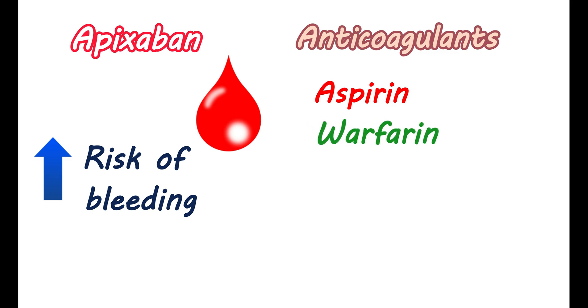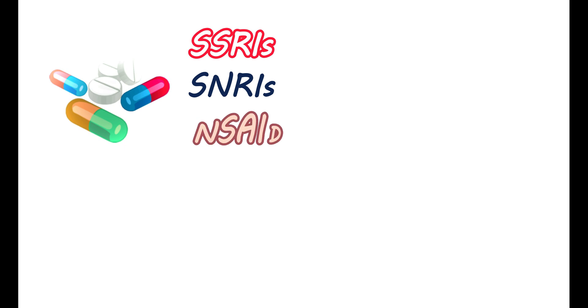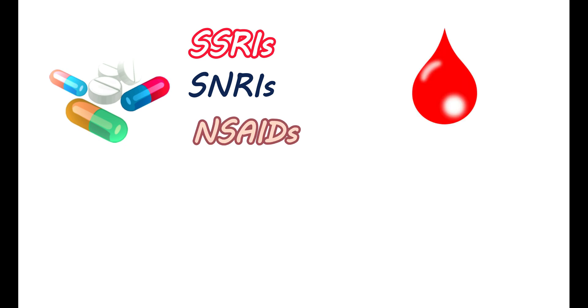Warfarin is one of the oral anticoagulants that can also increase the risk of bleeding when combined with apixaban. Heparin is an anticoagulant that can also increase the risk of bleeding. Similarly, thrombolytic agents may also increase the risk. Medications like SSRIs (selective serotonin reuptake inhibitors), SNRIs (serotonin and norepinephrine reuptake inhibitors), and some NSAIDs can also increase the risk of bleeding with apixaban.